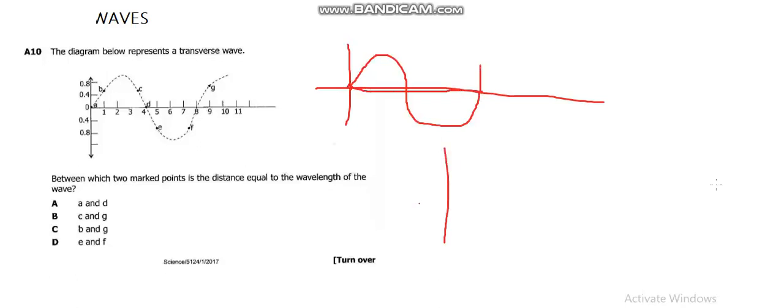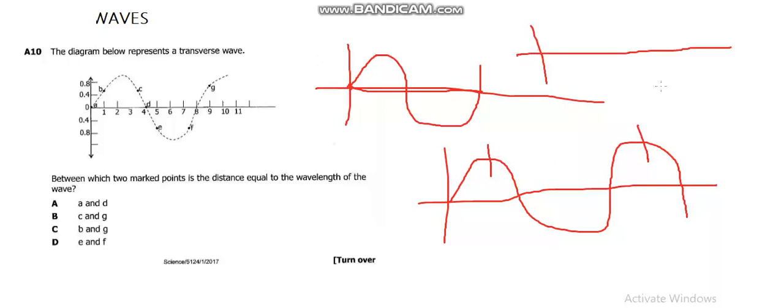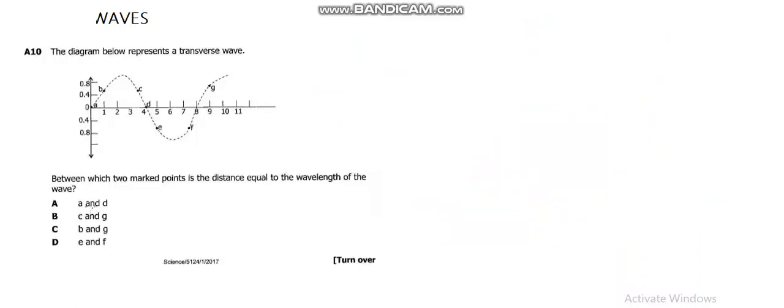Or if I have something like this, it can also be the distance from there to here. Or I can have something like this, it can also be the distance from there to here. So as long as they are making the same difference, there is no problem. Right. So for this one, they are saying A and D. Look where A is and D is. This is not a wavelength because this is only a crest, not even another crest.